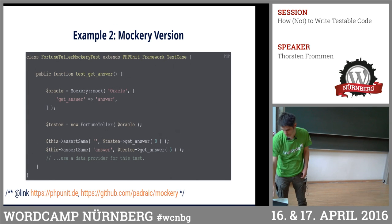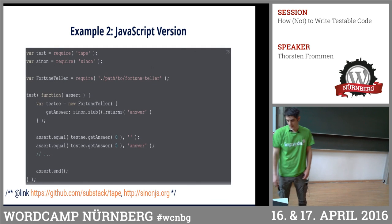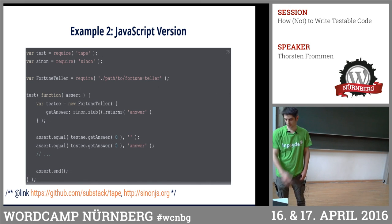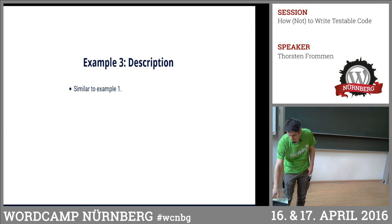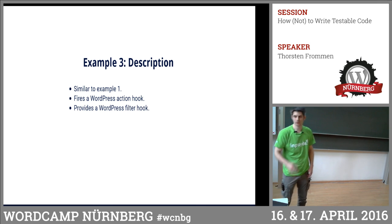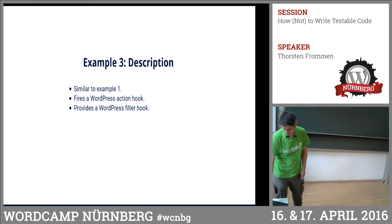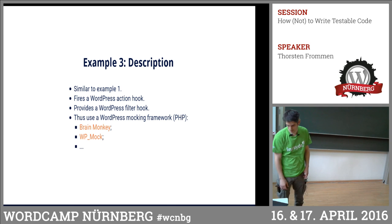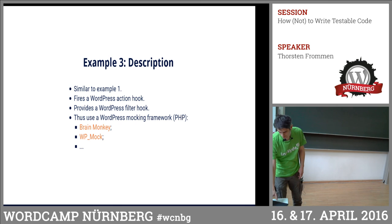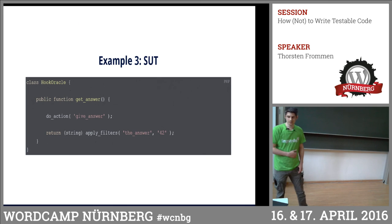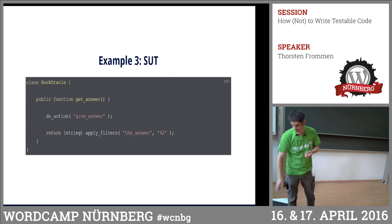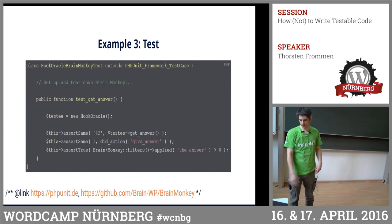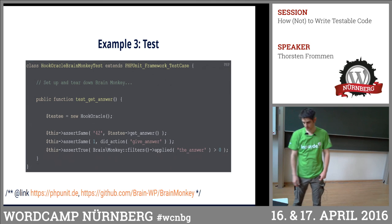The first version used PHPUnit's built-in mock builder, and mockery is another mock framework for objects — pretty much the same. There's also a JavaScript version using Sinon.js to mock the object. A third example is the same as the first but with a WordPress action and a filter hook involved — that's why I'm using a WordPress mocking framework. BrainMonkey and WPMock are two mocking frameworks that work specifically for WordPress.